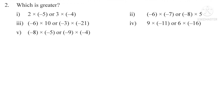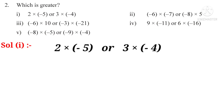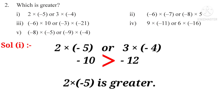Question 2 — Which is greater? Solution 1: 2 into minus 5, or 3 into minus 4. 2 into minus 5 equals minus 10. 3 into minus 4 equals minus 12. These numbers are not in the order of the number line, so put greater than symbol — minus 10 is greater. Therefore, 2 into minus 5 is greater.